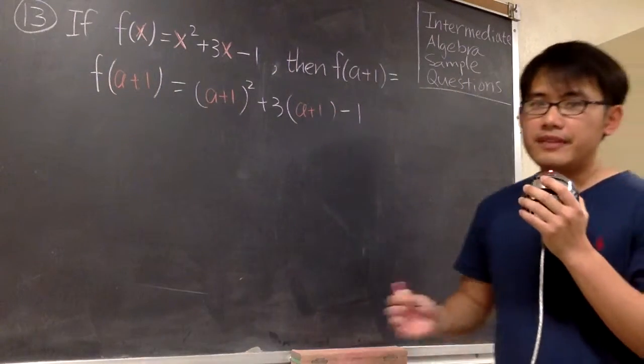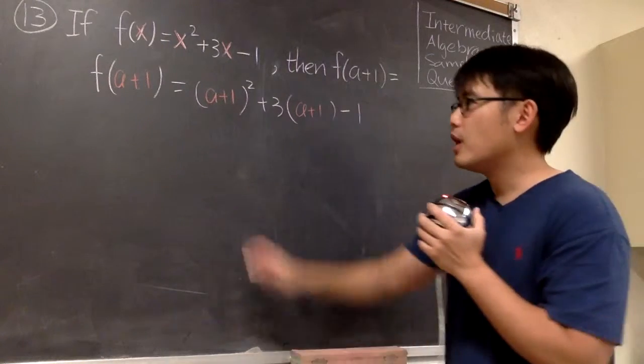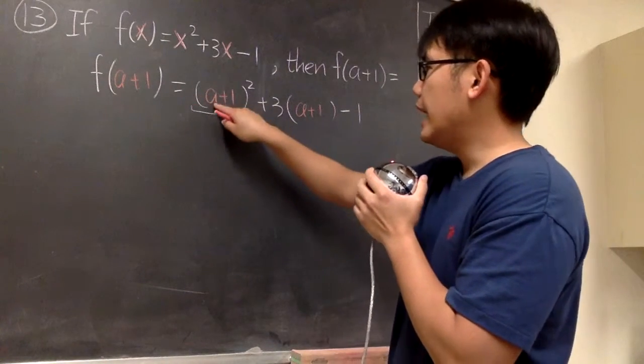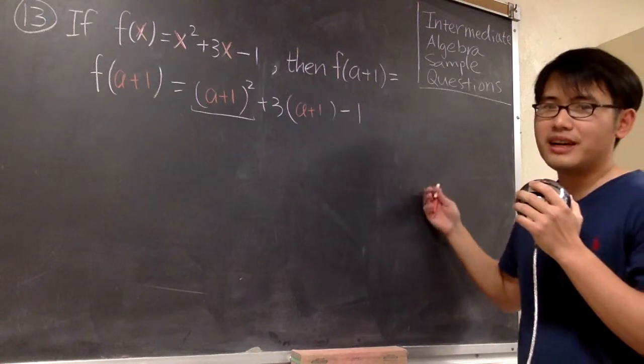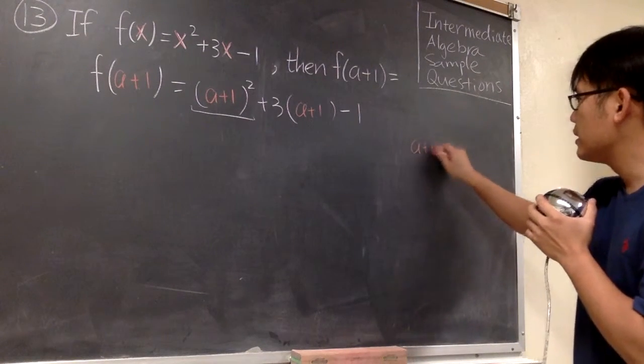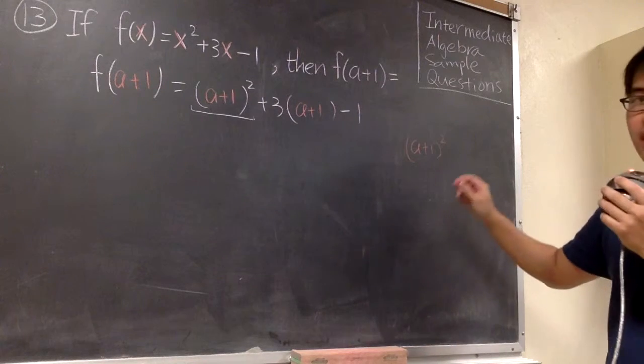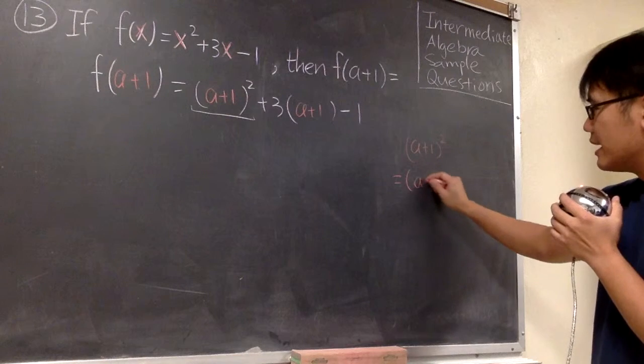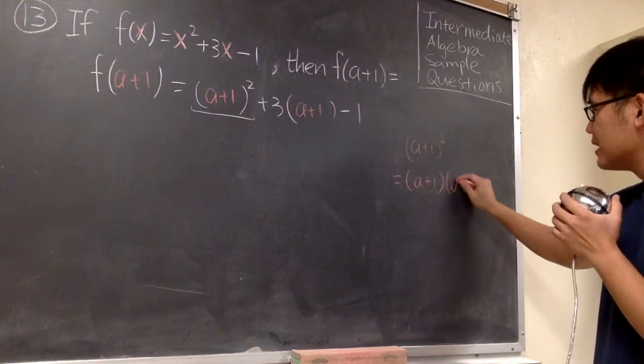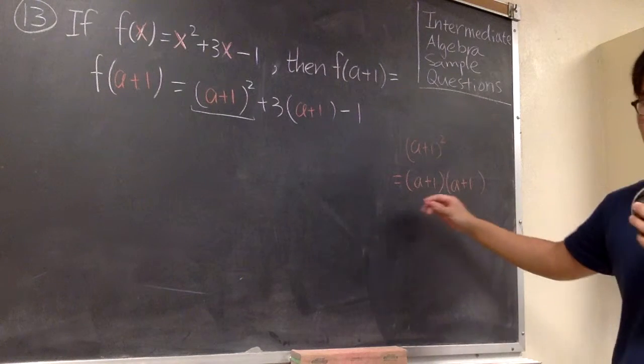Now, this right here is the setup, and now this is what we have to do. We are going to work out this power, (a+1)². To do that, let me just put this down on the side. (a+1)² means we have to write this down twice: (a+1) times (a+1). Then we have to multiply this out.